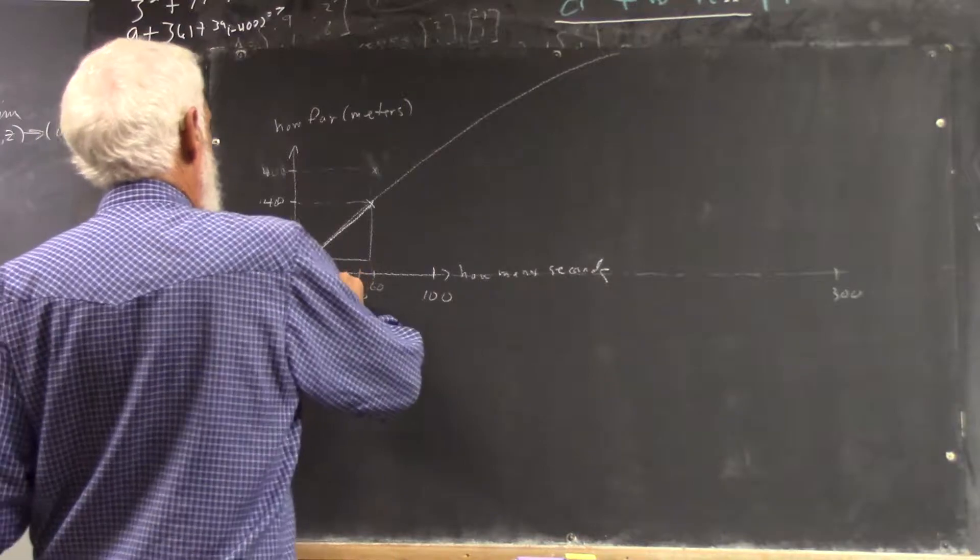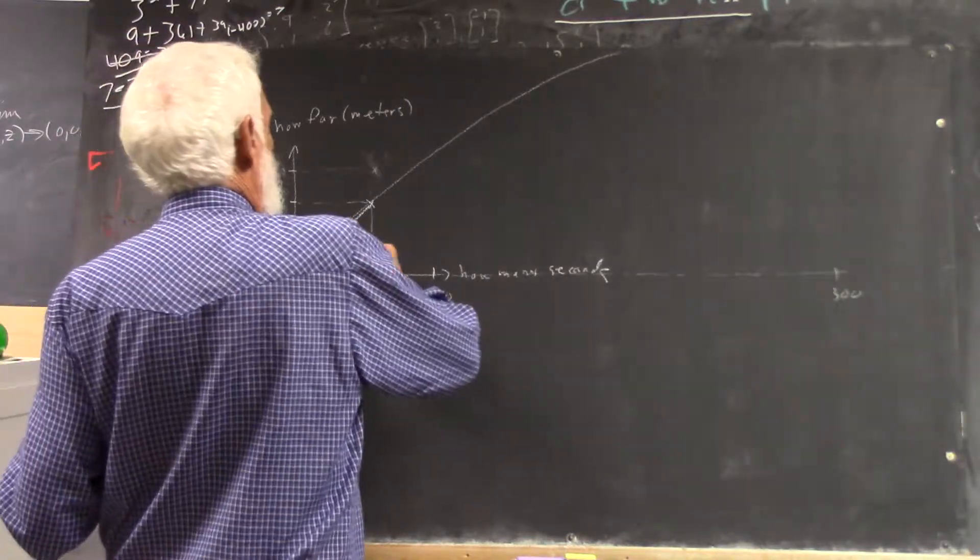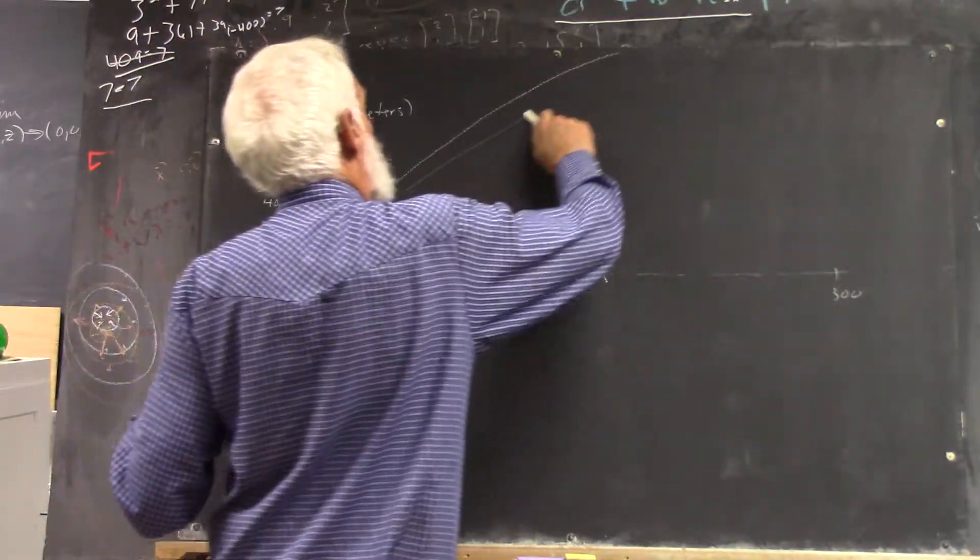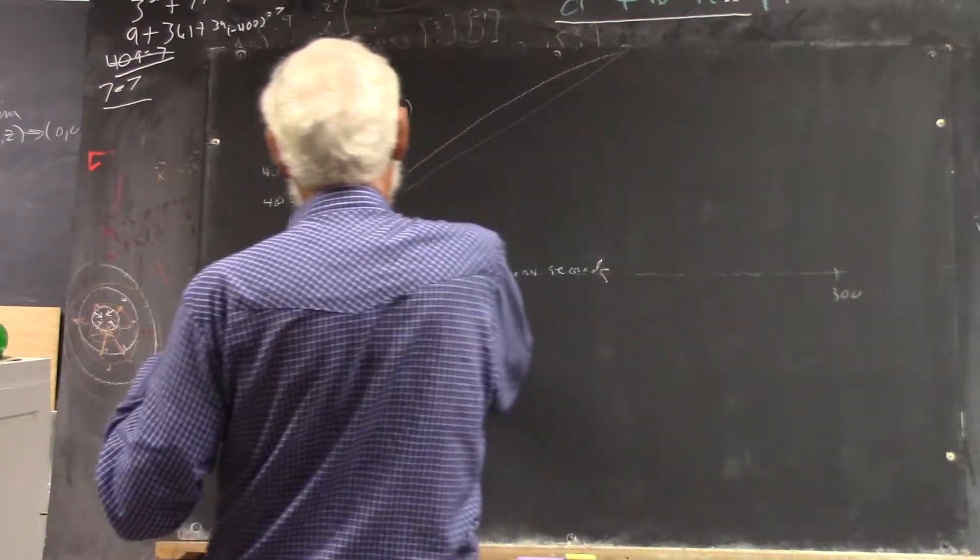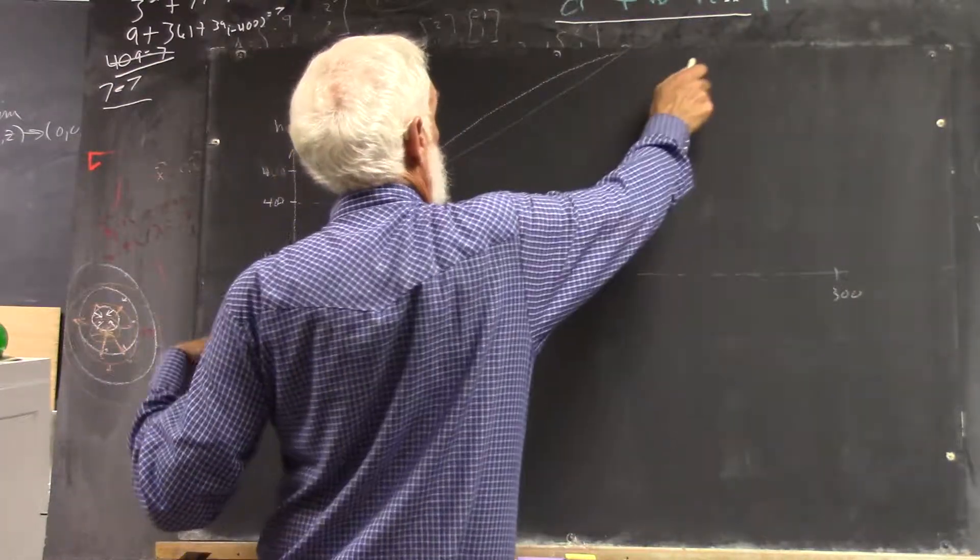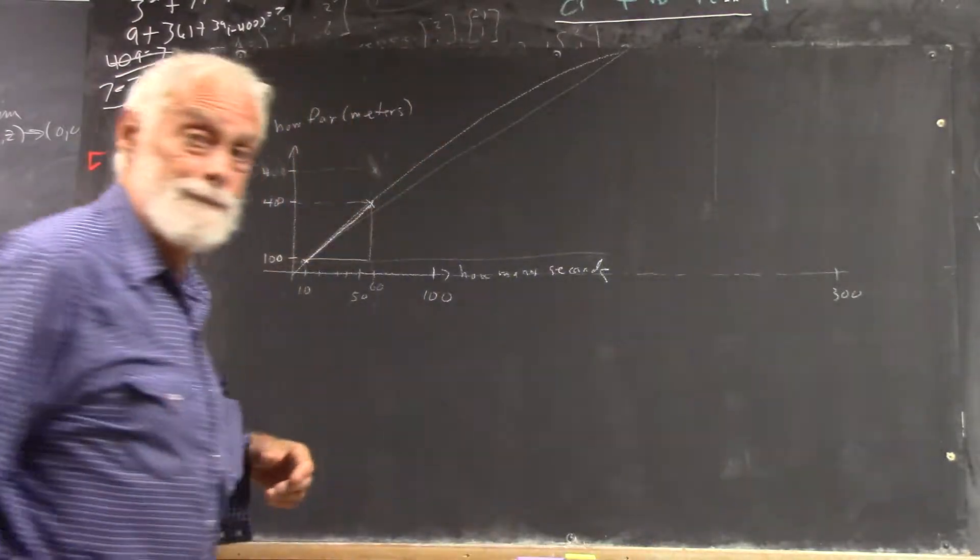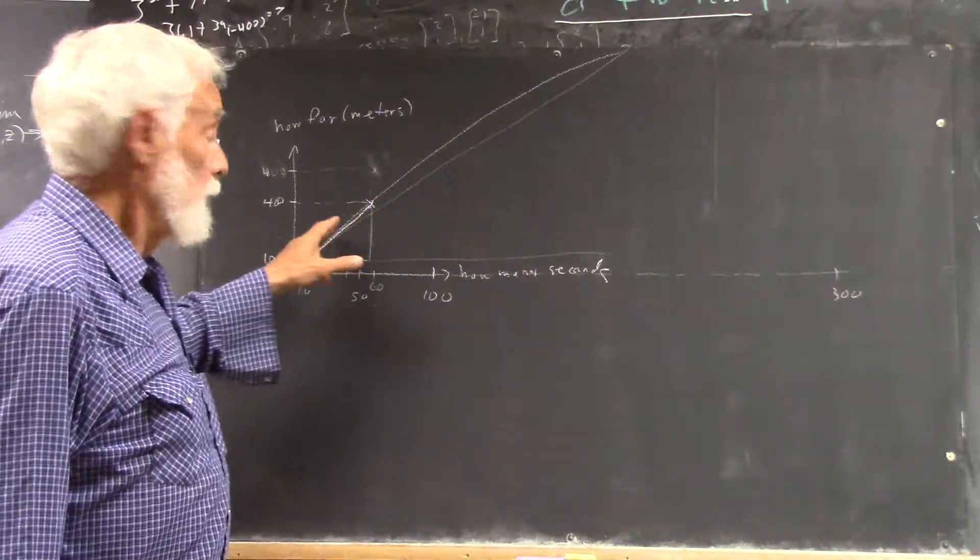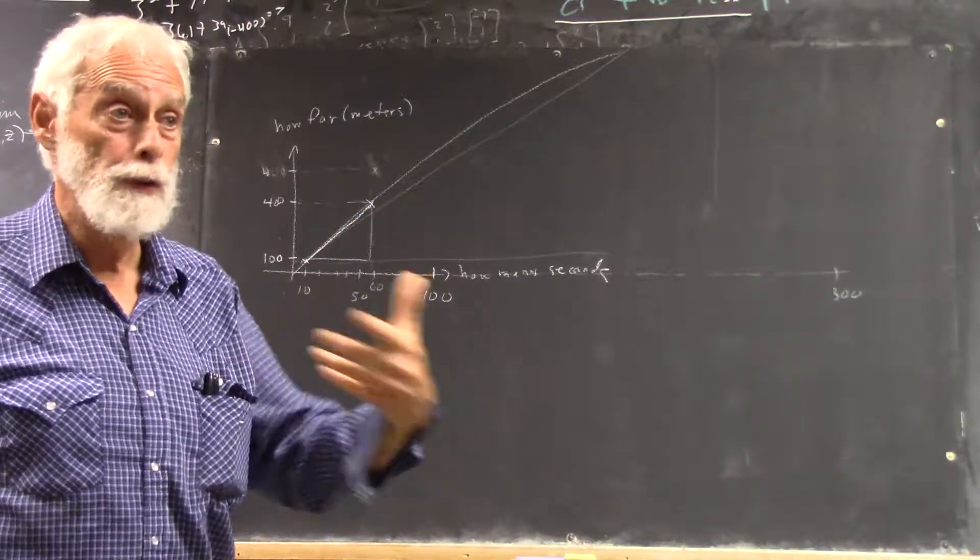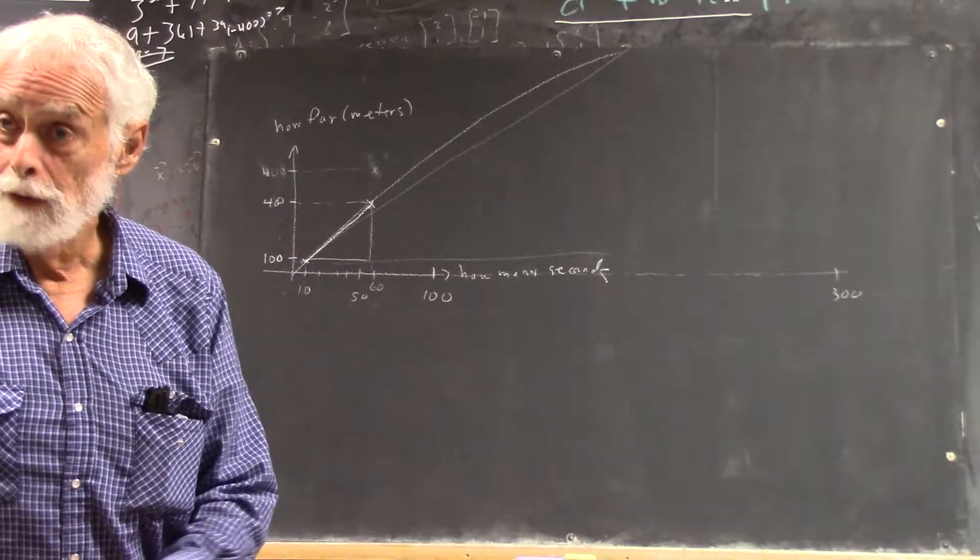And a fundamental triangle from here out to there has a rise and a run and a meaning. The slope of this triangle is going to be less than the slope of this triangle because of what the slope of the fundamental triangle means.